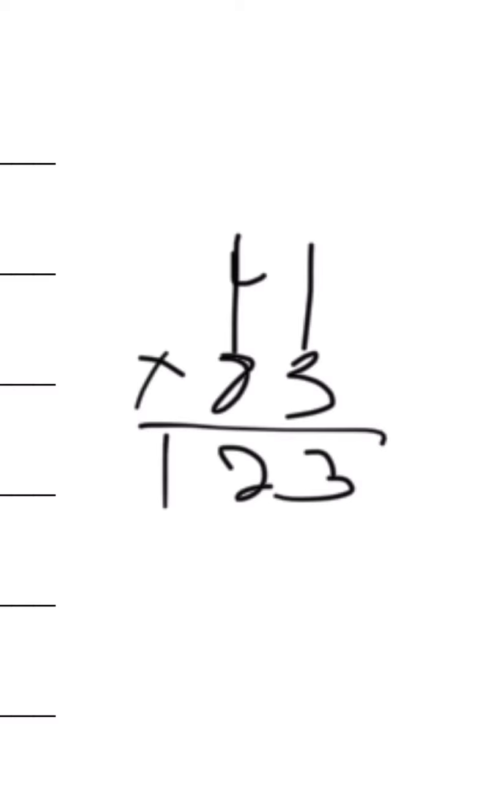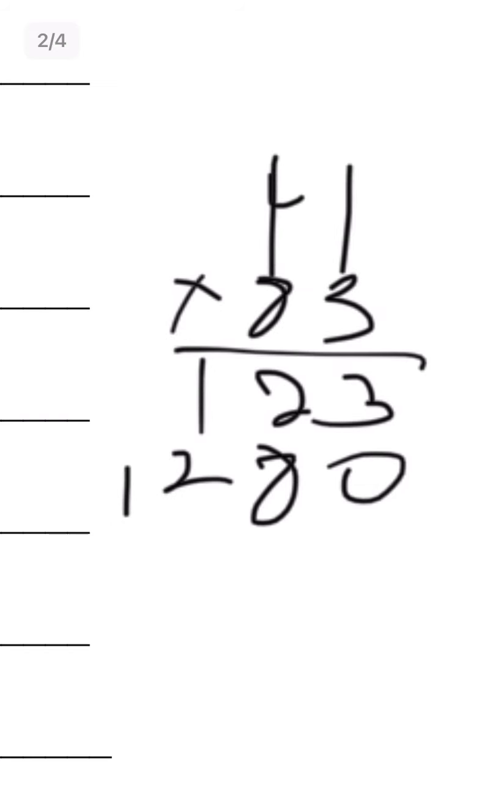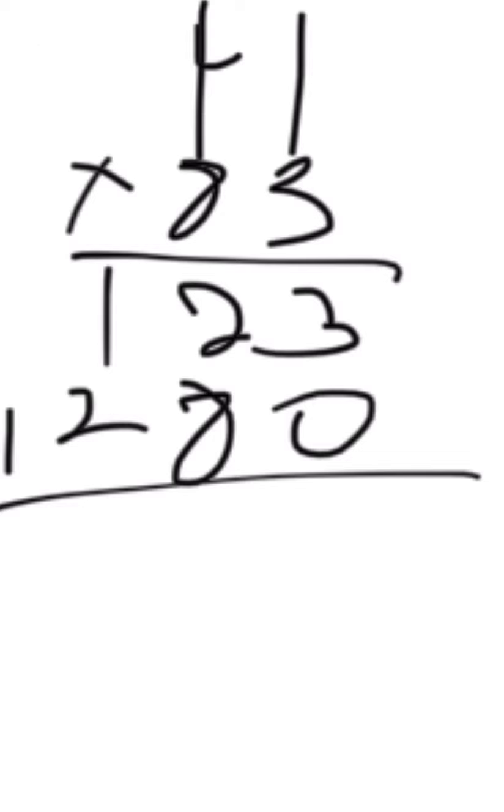40 times 3 is 120, and 80 times 1 is 80. And 40 multiplied by 80 is 1,200. You need to add these two numbers.